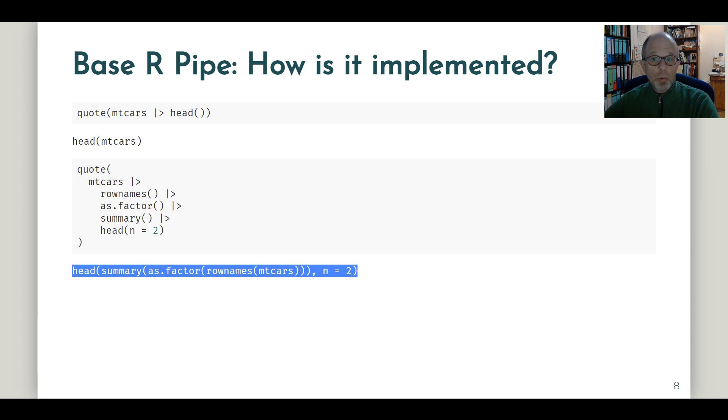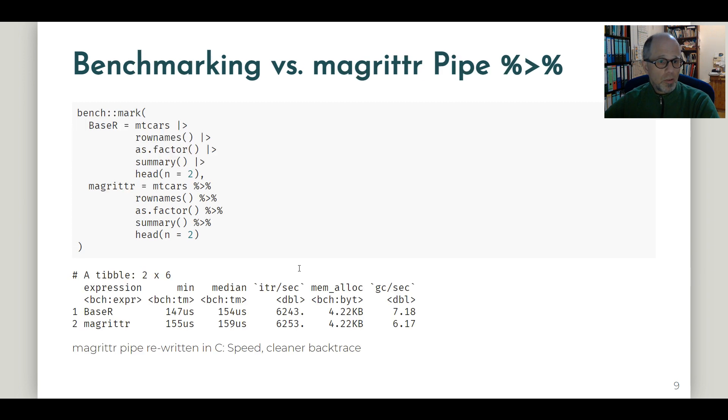So now we could assume that the base R pipe should be more efficient and faster. But when dealing with runtimes of code, we shouldn't rely on assumptions but measure. So that's what I did here. I'm using the bench package and we benchmark the base R approach and the Magrittr approach. So the code is essentially the same and the only difference is just the different implementations of the pipe. And we get the results and you see that the differences are not very large, just a small difference, but indeed the base R implementation is executed faster than the Magrittr implementation.